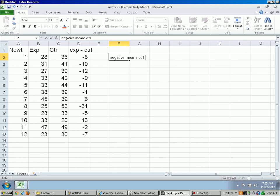So negative means, for example, the first newt, a negative eight means the control group is faster. Control is greater. Then a positive means that the experimental limb is greater. In other words, faster.